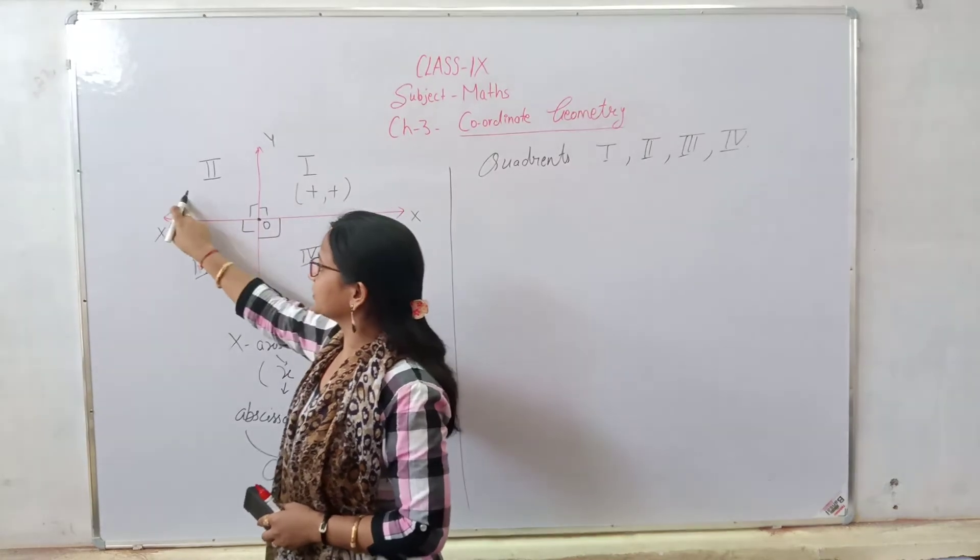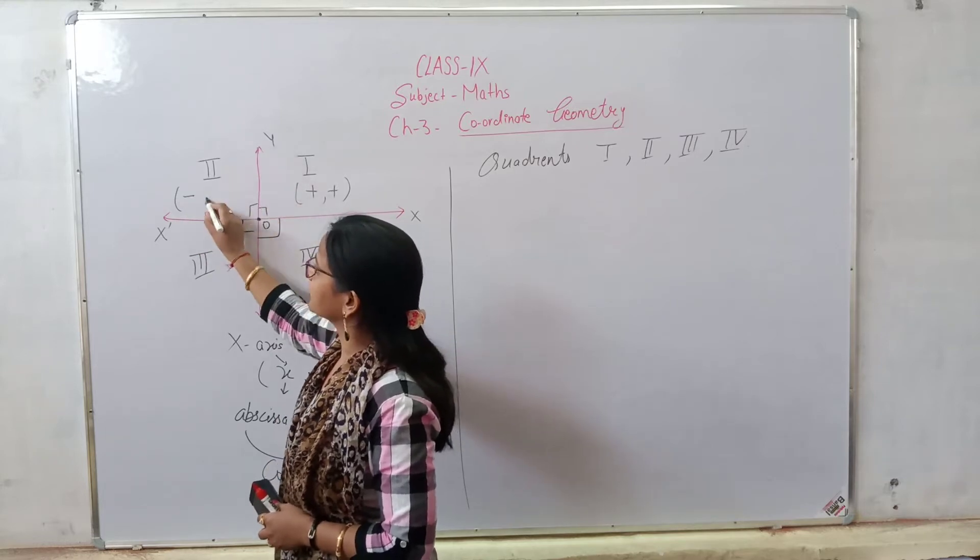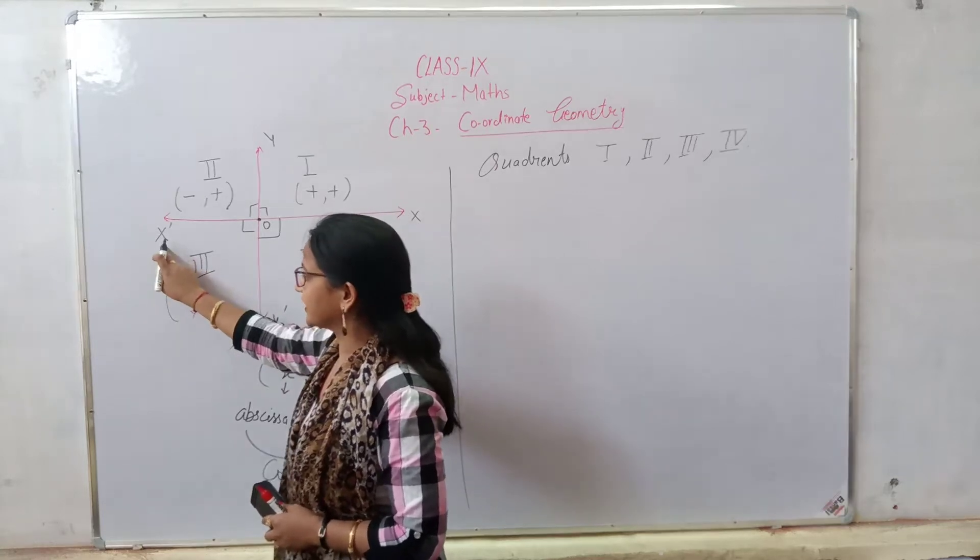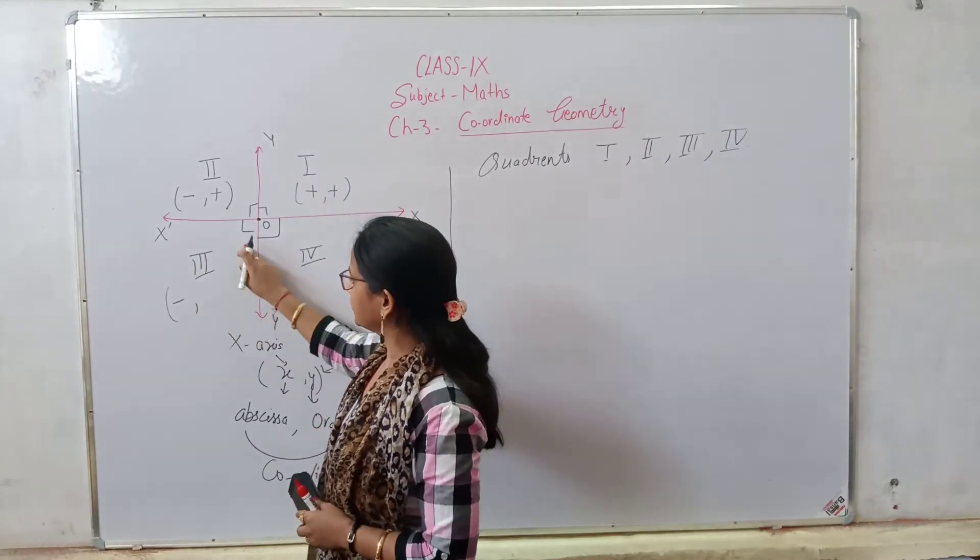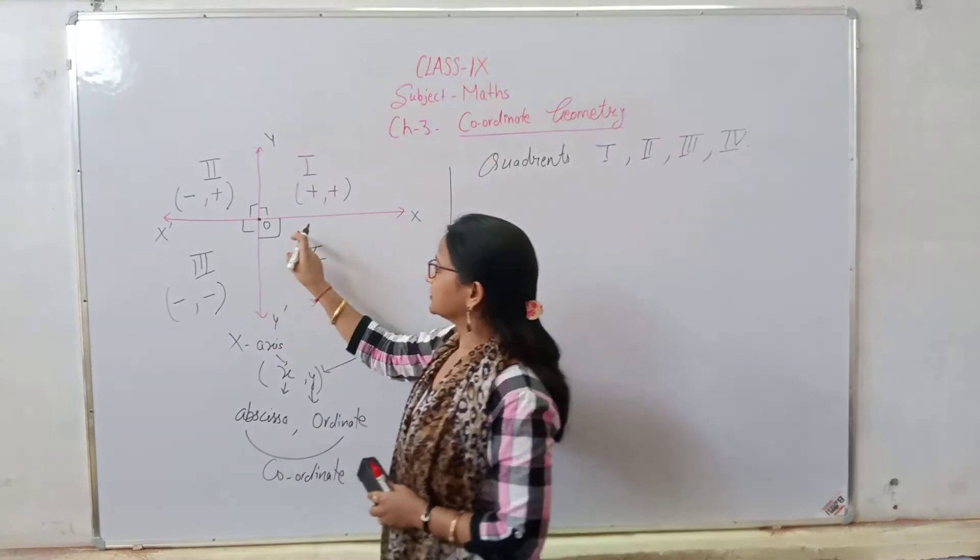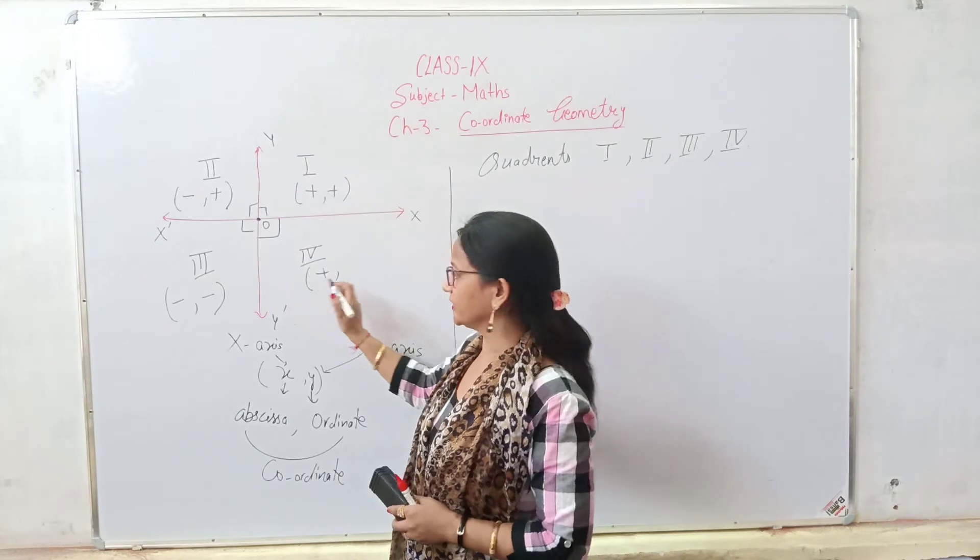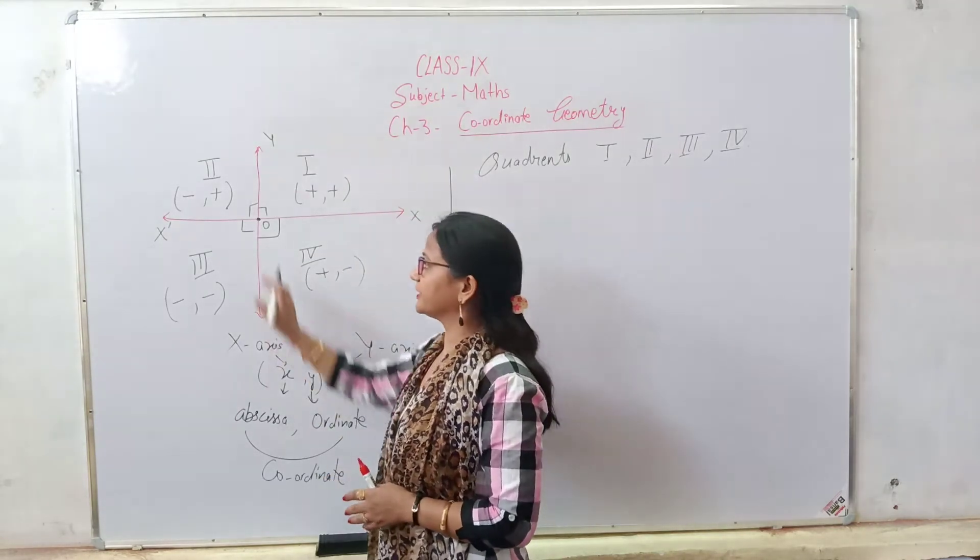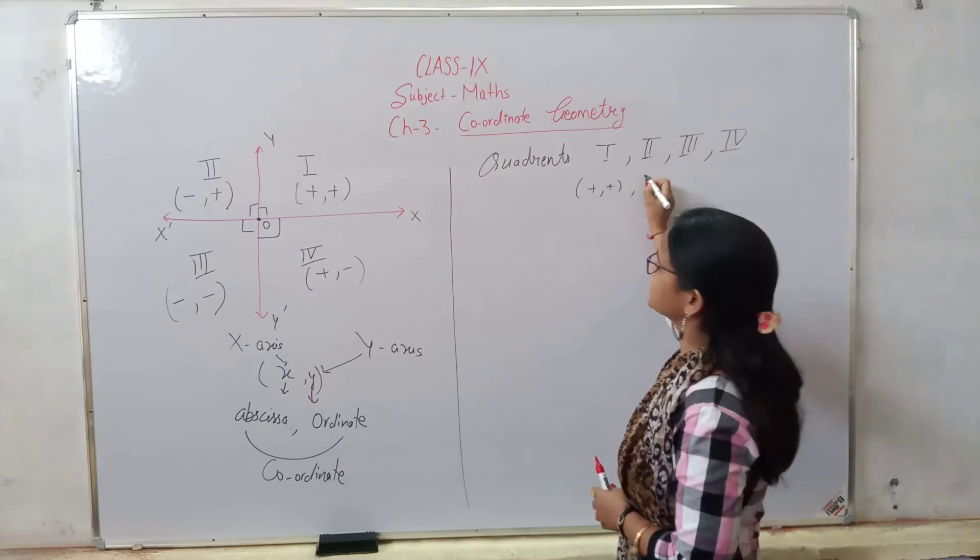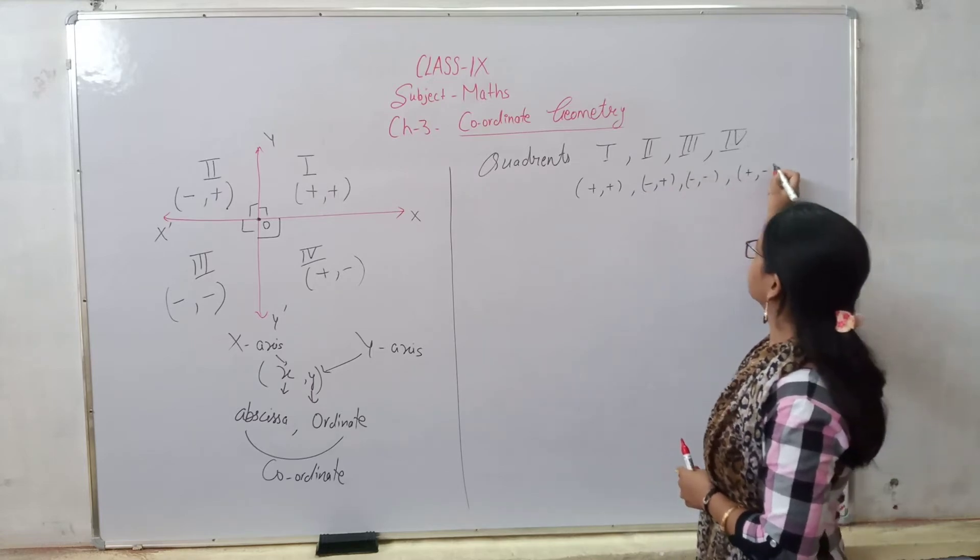Second quadrant - here x is negative and y is positive. Third quadrant - y dash means negative, x dash means negative. Fourth quadrant - x is positive and y dash is negative. So if we have four quadrants, first is plus plus, second is minus plus, third is minus minus, and fourth is plus minus.